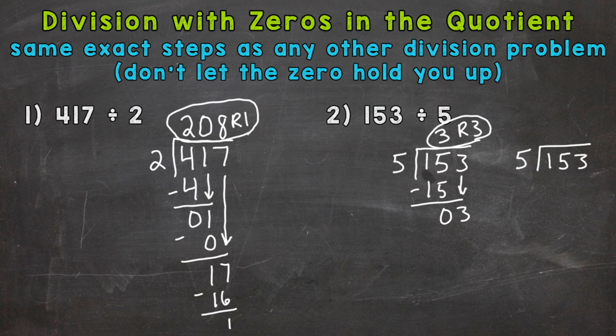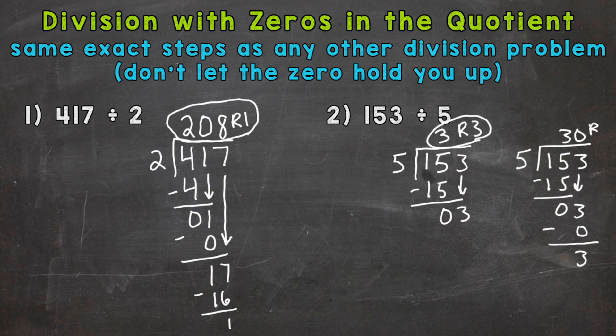So we had 3 here, 15, subtract 0, bring down the 3. So we cannot pull a whole 5 out of that 3. So we need to put a 0 in the 1's place here. We have to go all the way over. So we need that 0. Then go through our steps. 0 times 5 is 0, subtract, and now we get a remainder of 3.